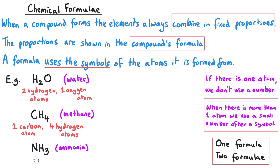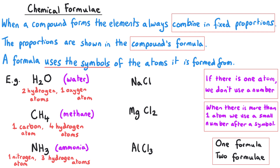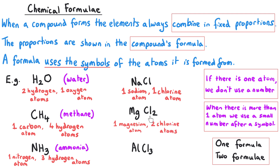Ammonia has one atom of nitrogen and three atoms of hydrogen. NaCl has two capital letters — Na for sodium and Cl for chlorine — with no numbers, meaning they combine in a one-to-one ratio. For magnesium chloride, MgCl2, there is no number after Mg meaning one atom of magnesium, but two atoms of chlorine for every one magnesium. For aluminium chloride, there is one aluminium for every three atoms of chlorine. These numbers in the formulae are the proportions or ratios in which the atoms combine in the compound.